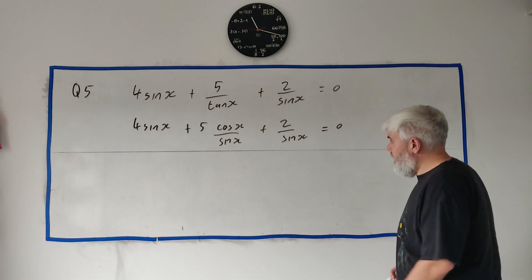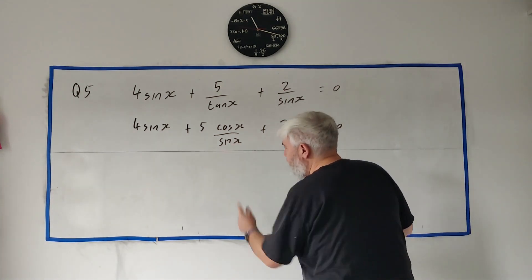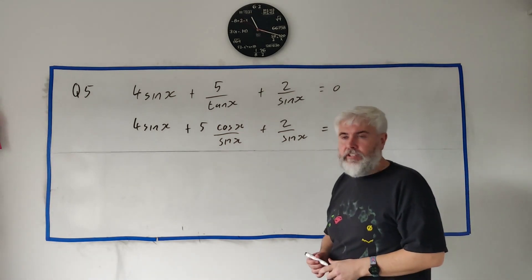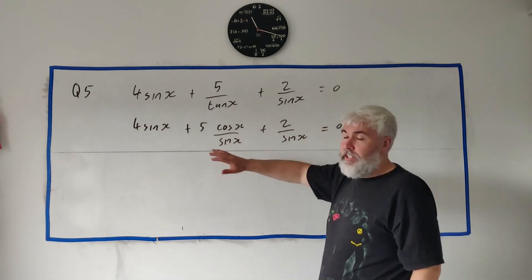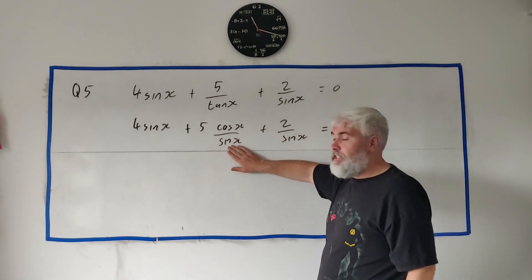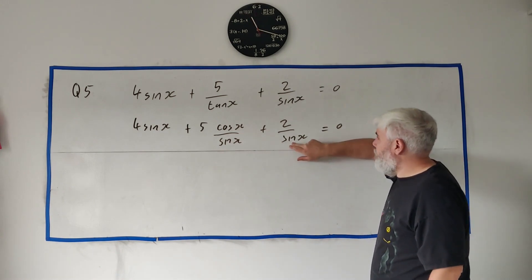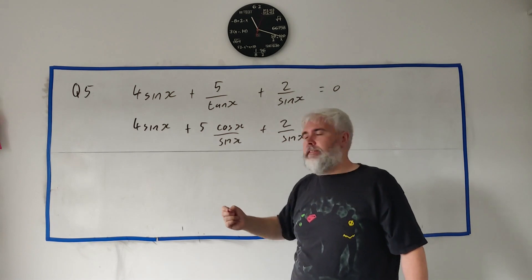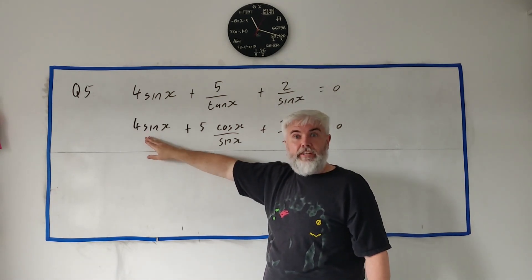The next thing that jumps out to me is there's a sine x, and thankfully there's a zero here. So it's quite easy to get rid of stuff. We can multiply everything by sine x. That would disappear, that would disappear, leaving just cosine here.